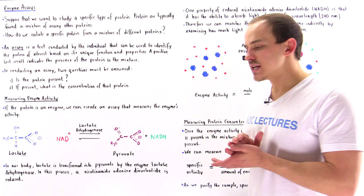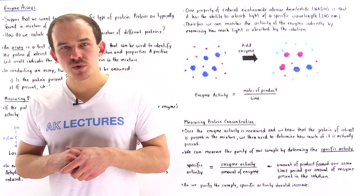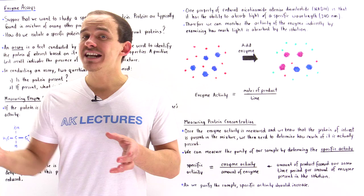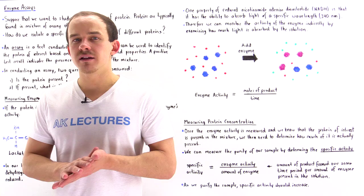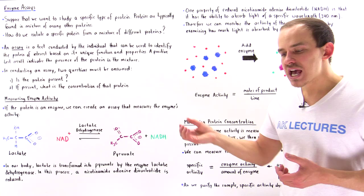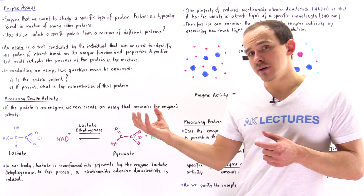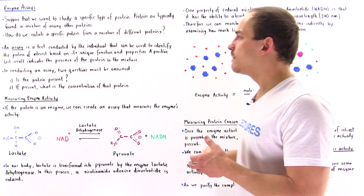Inside our body and inside our cells, we have a great variety of different types of proteins. Now let's suppose we want to study a specific type of protein. The question is, how do we get a hold of that protein of interest? Because inside our body, any given protein always exists in a mixture of all different types of proteins and biological molecules. So if we have a solution of proteins, how do we know the protein we want to study is in that mixture? And if it is, how do we purify and isolate that protein among all the different types of proteins found in that mixture?